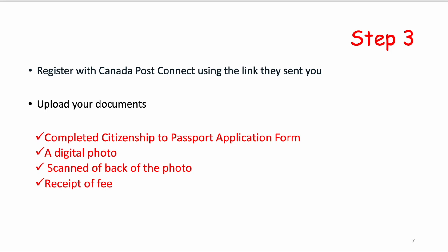Once you've gathered all your documents, register with Canada Post Connect using the link sent to you after your email to them. They will send you a link in their response — that's the link you'll use to register. When responding, make sure you upload the following documents: the completed citizenship-to-passport application form, signed and scanned.